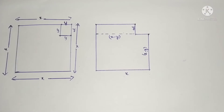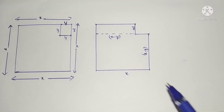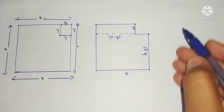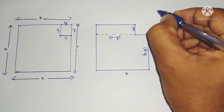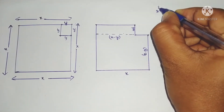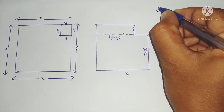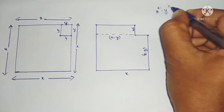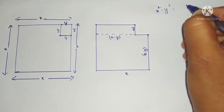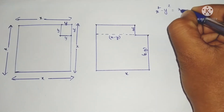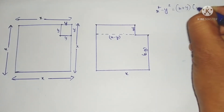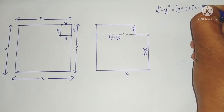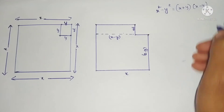Hello students, welcome to my channel. Today in this video we are going to see the geometrical proof of the algebraic identity x squared minus y squared is equal to x plus y into x minus y.